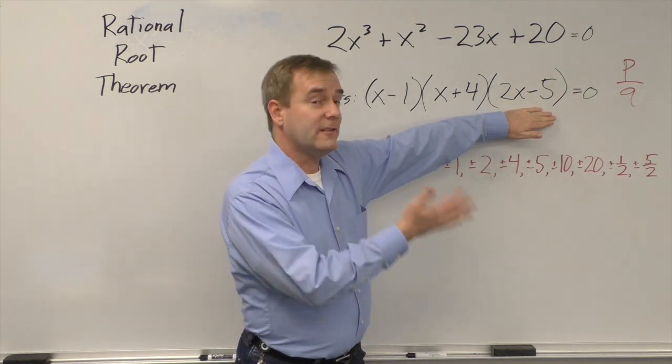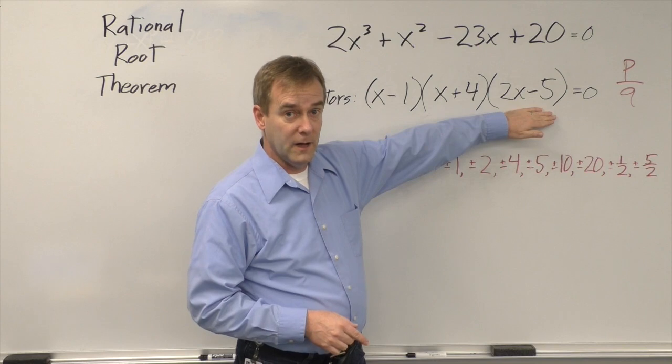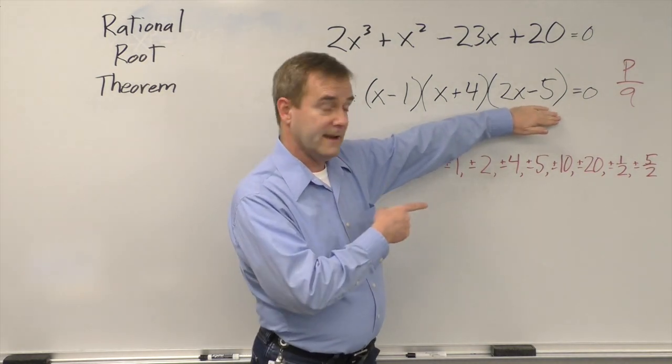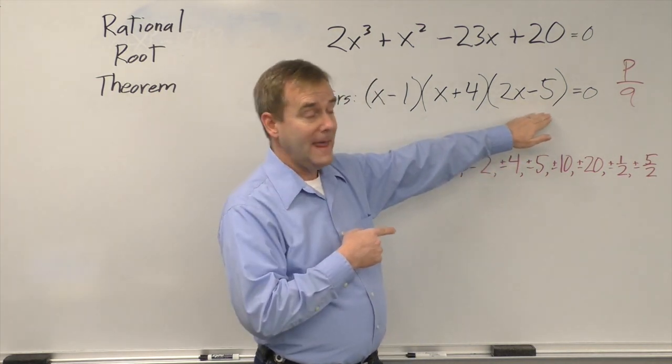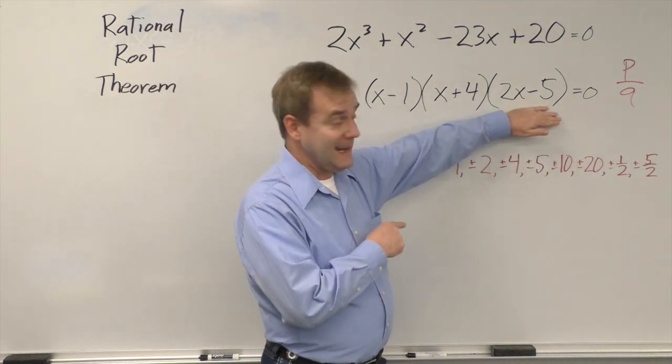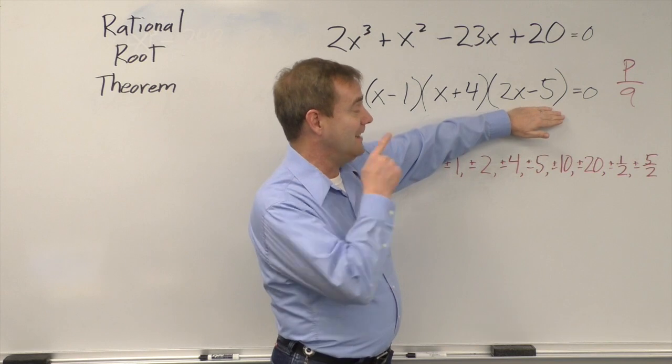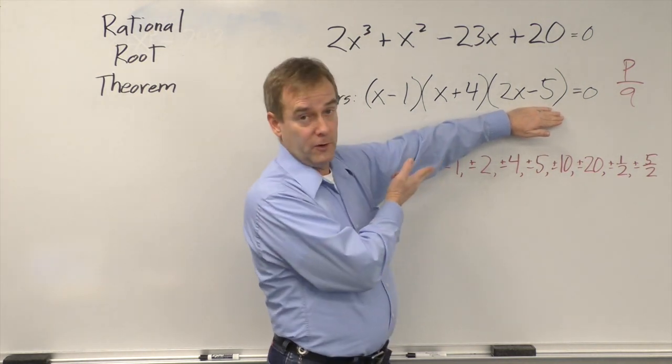And the thing that will explain that for us is looking at this term. 2x minus 5 equals 0, according to the zero products property, would give us 0 for the whole polynomial. To solve this, we would take 2x minus 5, set it equal to 0, add 5 to both sides, and then divide everything by 2. We created this correct root from this original polynomial by taking the last term from this factor and dividing it by the first term from this factor.